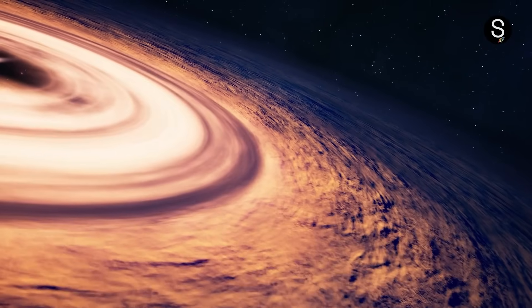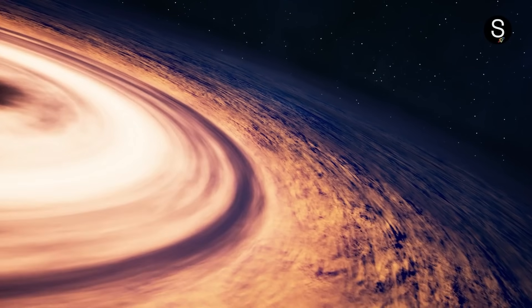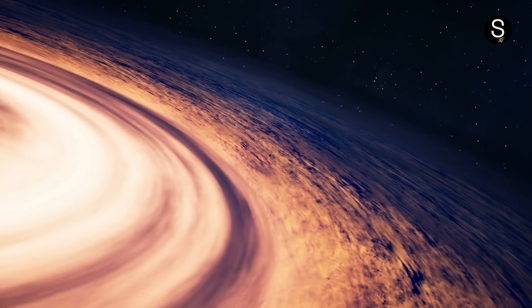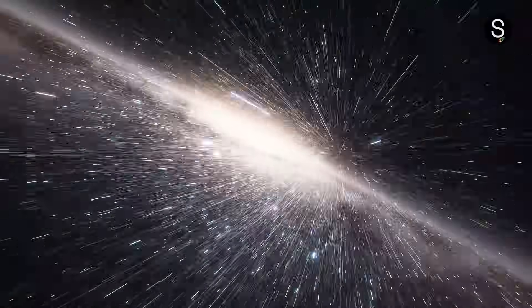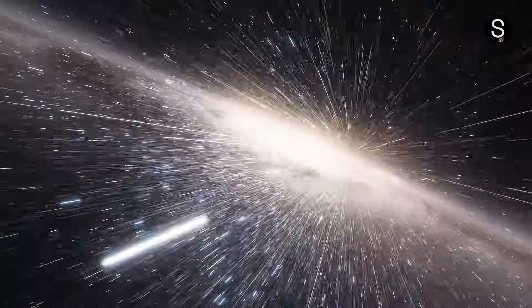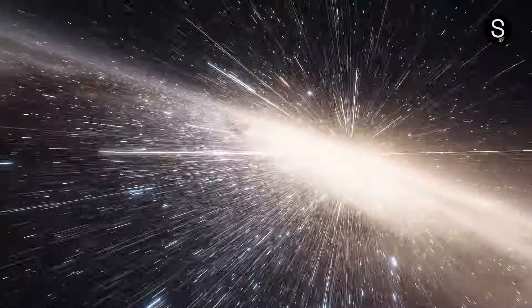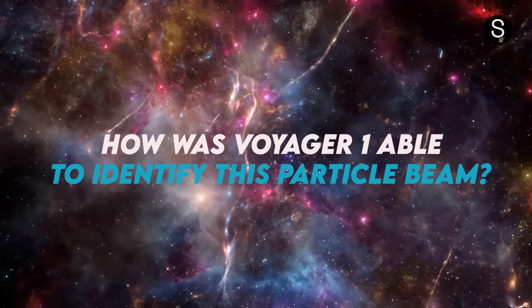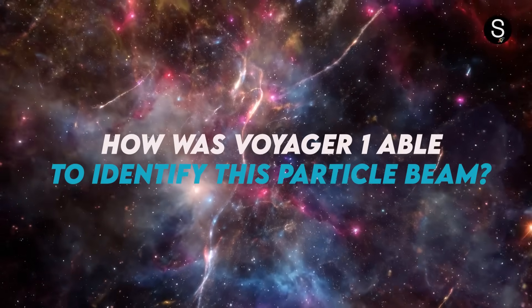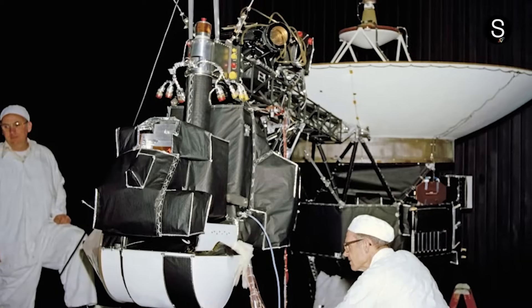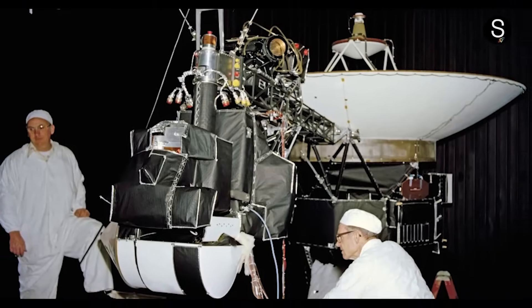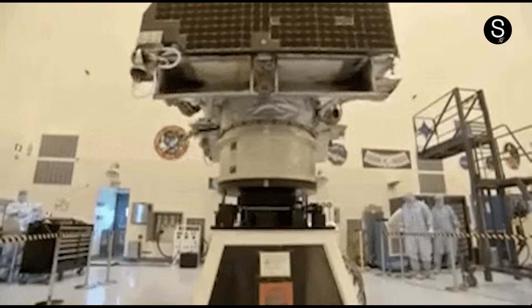When a black hole forms, it produces a tremendous shockwave which expels the surrounding gas and particles. This shockwave accelerates particles to incredible speeds as observed by spacecraft such as Voyager 1. But how was Voyager 1 able to identify this particle beam?